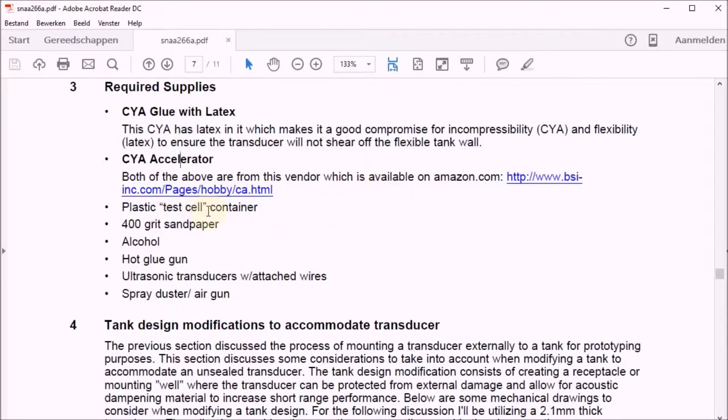I have the plastic container, I have 400 grit sandpaper, I have alcohol to clean my container before applying the glue, I have a hot glue gun, I have a transducer and I have an air gun. So everything that I need is there.